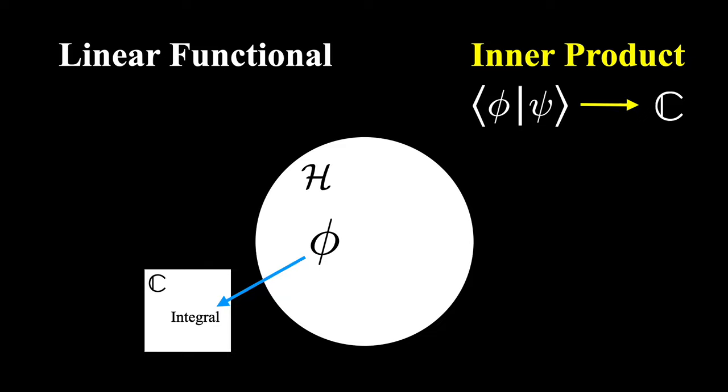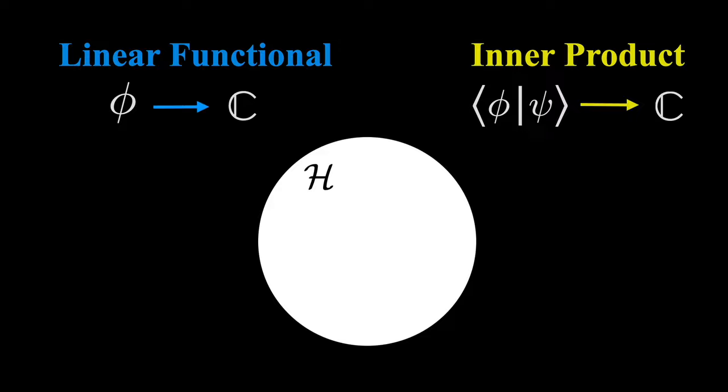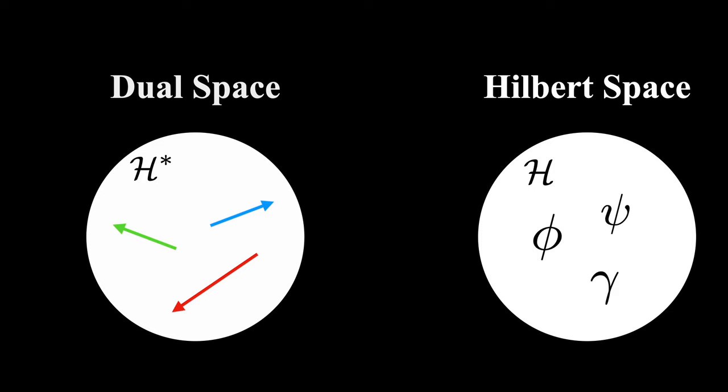And the collection of all of these linear functionals that can be defined for a specific Hilbert space actually forms itself another vector space, one that is called the dual space. So for any quantum system, you can formulate a specific Hilbert space to describe the states of that system. And each Hilbert space that can be constructed will also have an associated dual space.